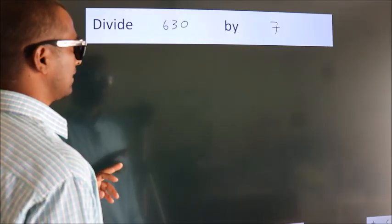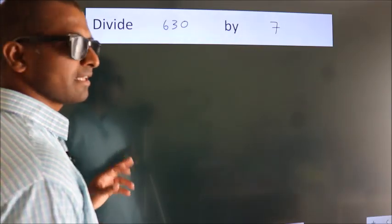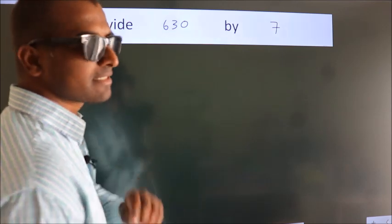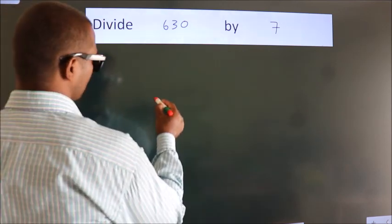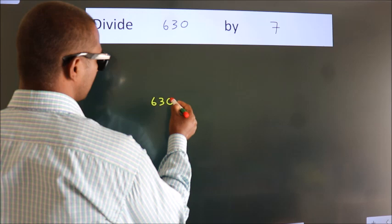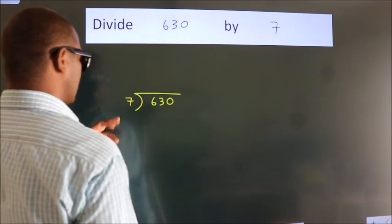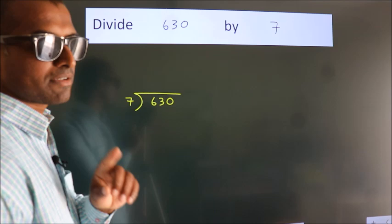Divide 630 by 7. To do this division, we should frame it in this way. 630 here, 7 here. This is your step 1.